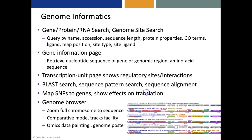The genome informatics capabilities of Pathway Tools include the abilities to search for genes, proteins, and RNAs, as well as to search for genome sites. These searches can let the user search by many different criteria. There's also a gene information page where the user can retrieve the nucleotide sequence of a gene or genomic region or the amino acid sequence of the product. There's a transcription unit page that shows regulatory sites and regulatory interactions, a BLAST search, a sequence pattern search, and a sequence alignment capability.